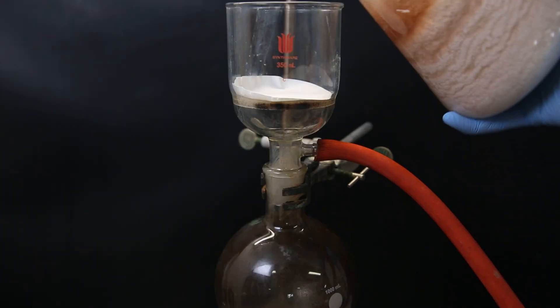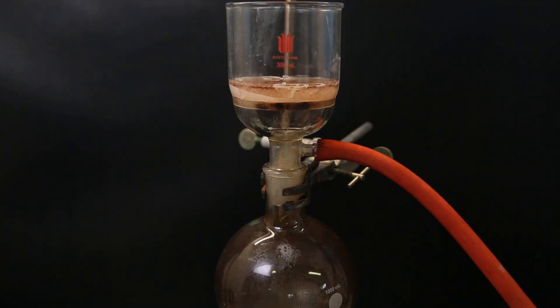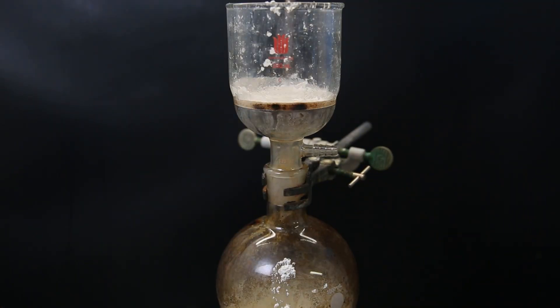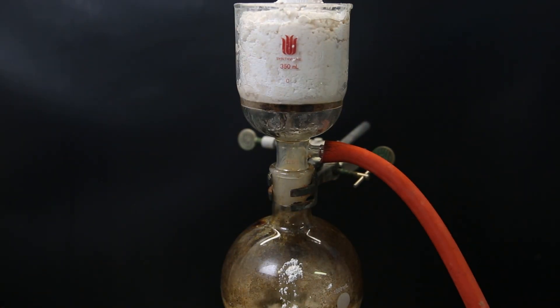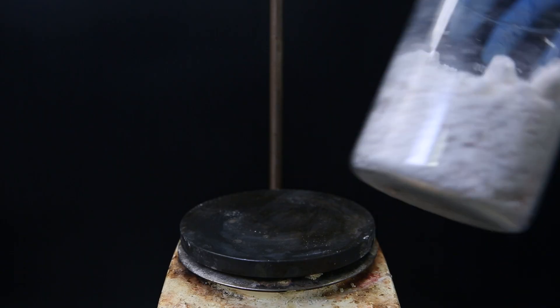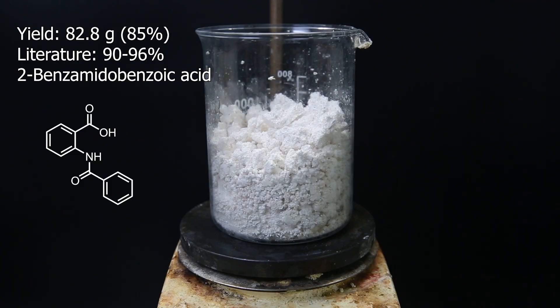After that, I collect all the precipitated product with vacuum filtration. The product is very soggy, and it fills the filter twice. I washed it with water and hexane. I then set it in the oven at 120C for a few hours to dry it out. The texture of this compound is very weird, so I'm not sure if it is completely dry. If I assume it is dry, the yield is 82.8 grams, which is 85%, and pretty close to literature.